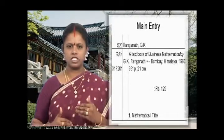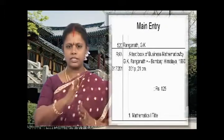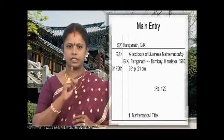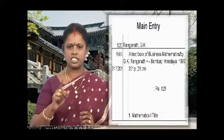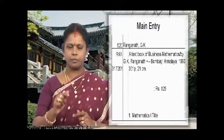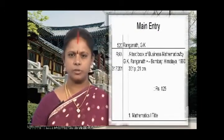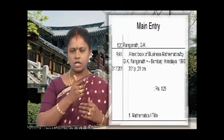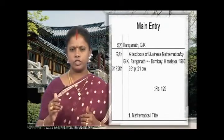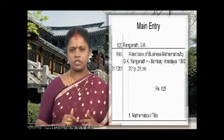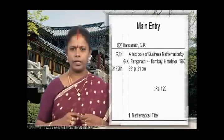Now let us start with the description part, which has four paragraphs. The first paragraph begins with the title and ends with the publisher's information, starting from the second vertical. The title is 'A textbook of business mathematics.' There is no subtitle, so we go to the statement of responsibility, using a slash, and write: by G.K. Ranganath. There is no subsequent statement of responsibility and no edition statement.